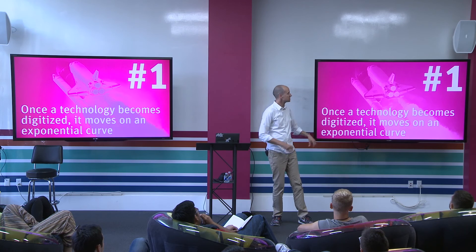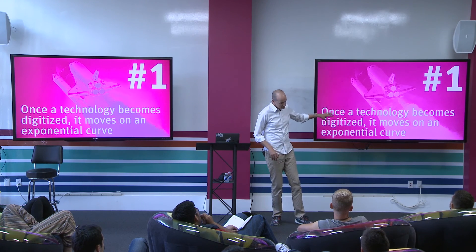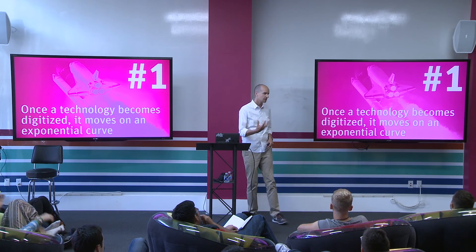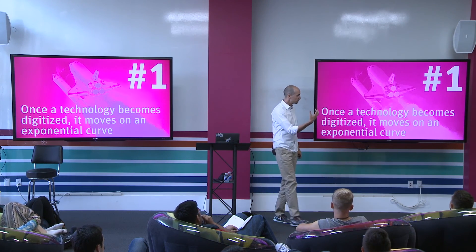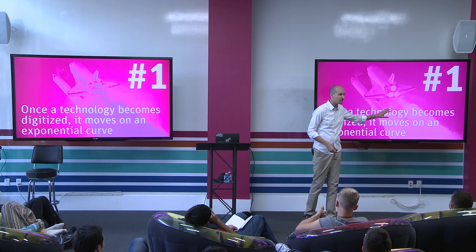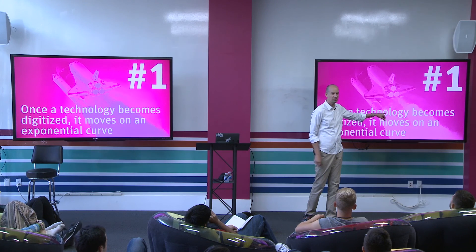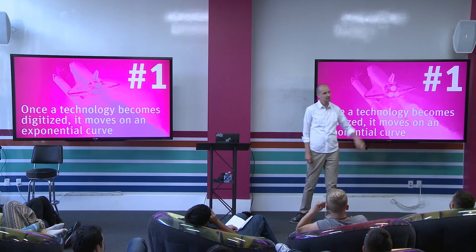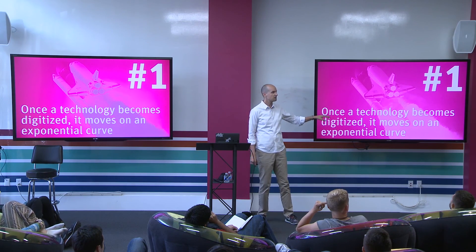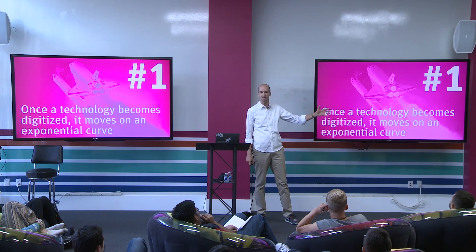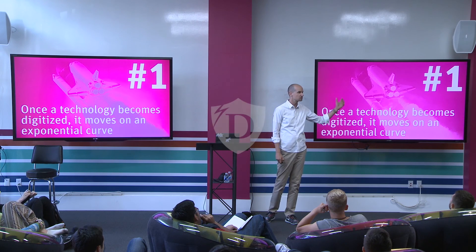So here's your first summarization, and as simple as it sounds, it's really profound: once a technology becomes digitized, it moves on an exponential curve. The biggest business opportunity you can find is if you identify something that is analog and can turn it into a digital good — because you move it from linear growth to exponential growth. Massive opportunities. This is why everybody is so incredibly bullish about, for example, agricultural technology — it's a whole business that is largely analog, and if you turn it digital, it turns into a gold mine.